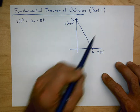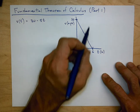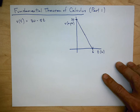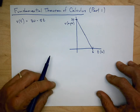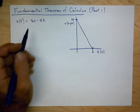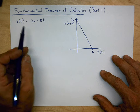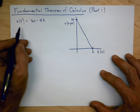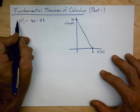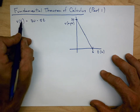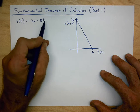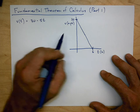This is a really big one because it actually has two parts. In this lecture, I'm going to talk about the first part, and in a separate lecture I'll talk about the second part. In order to develop a little bit of intuition about how these are related, I want to begin with this function — velocity as a function of time given by 30 minus 5t.